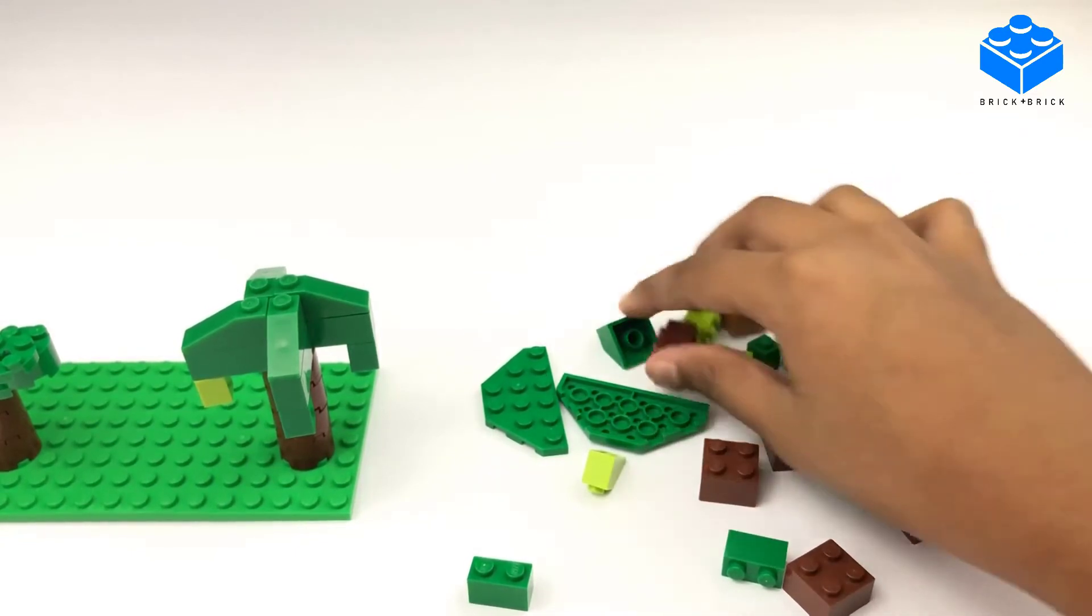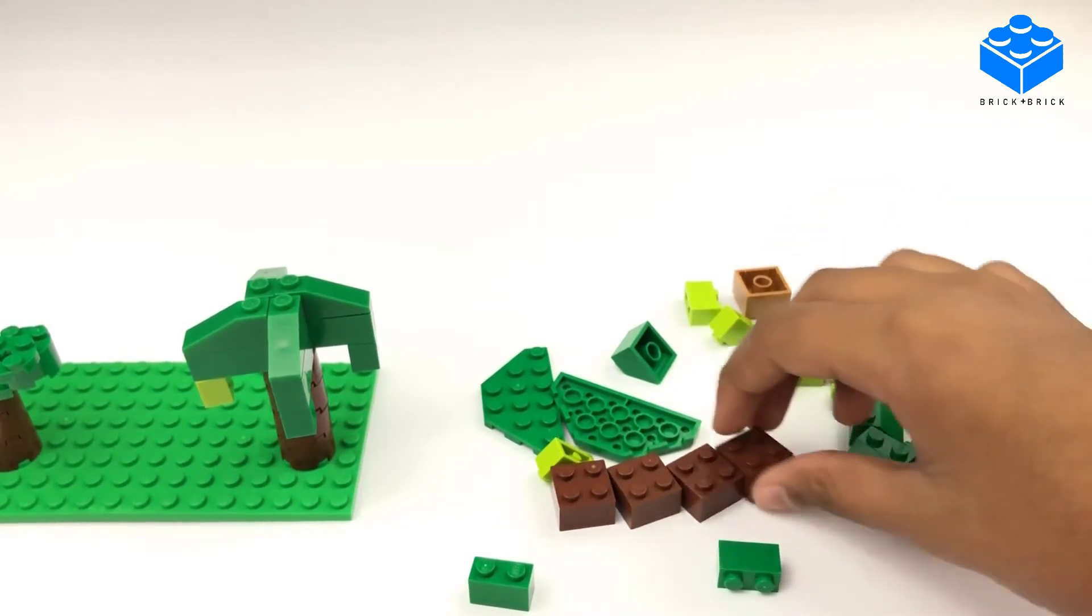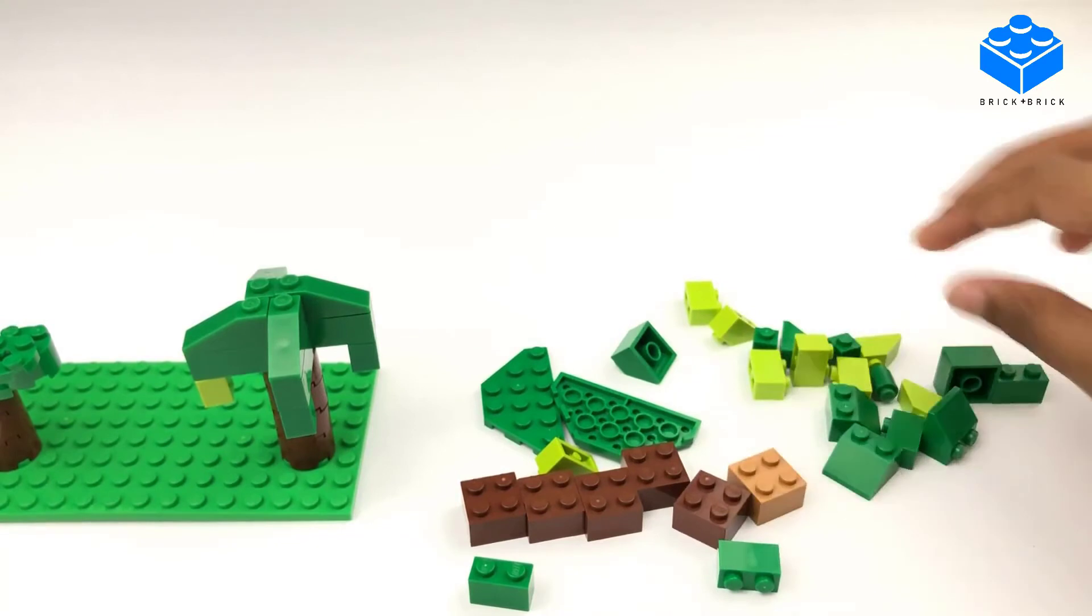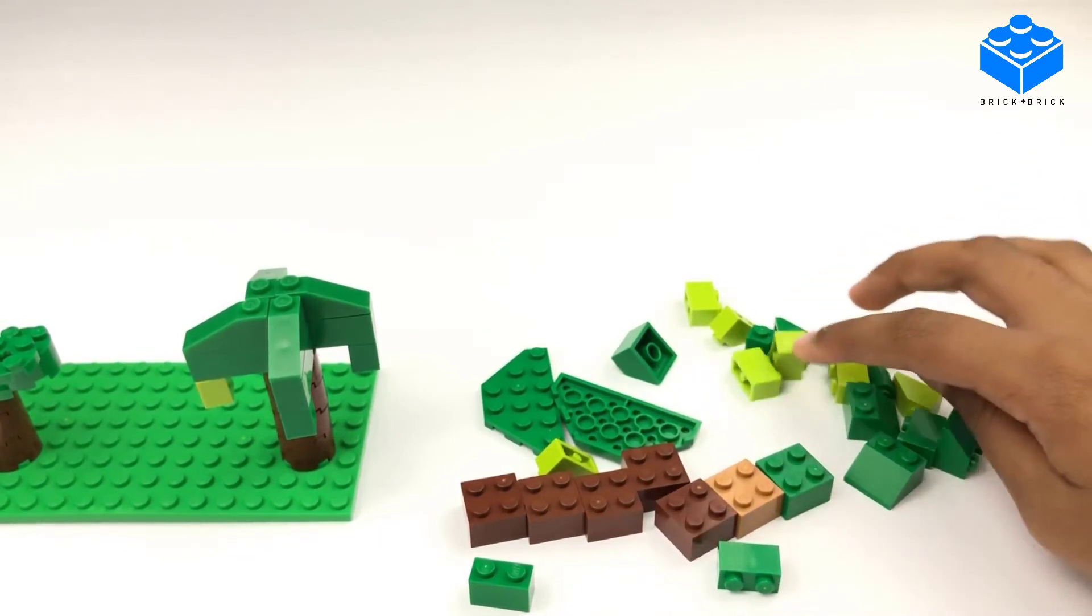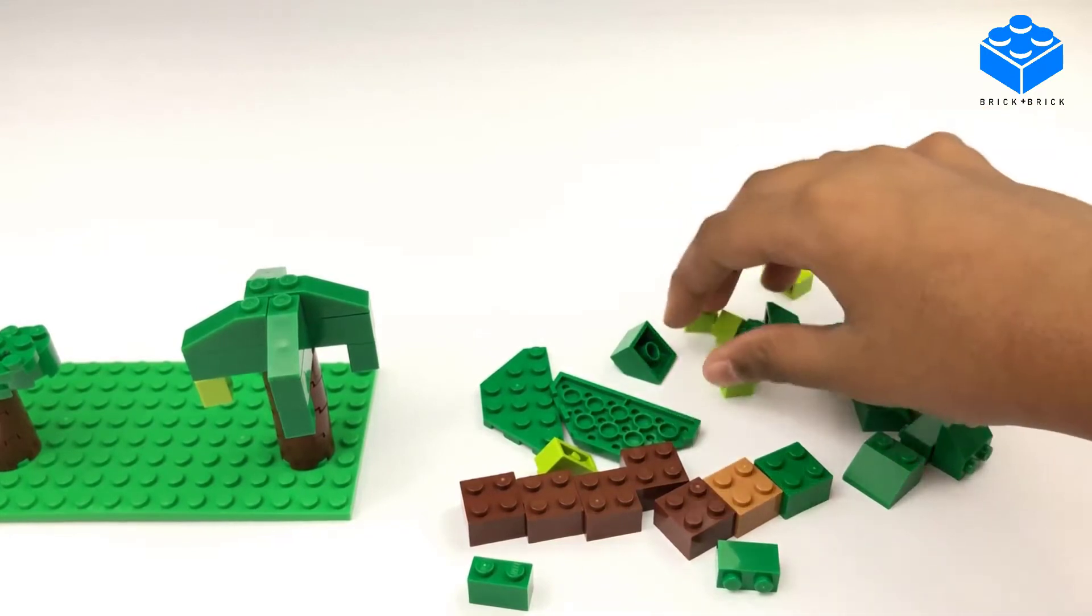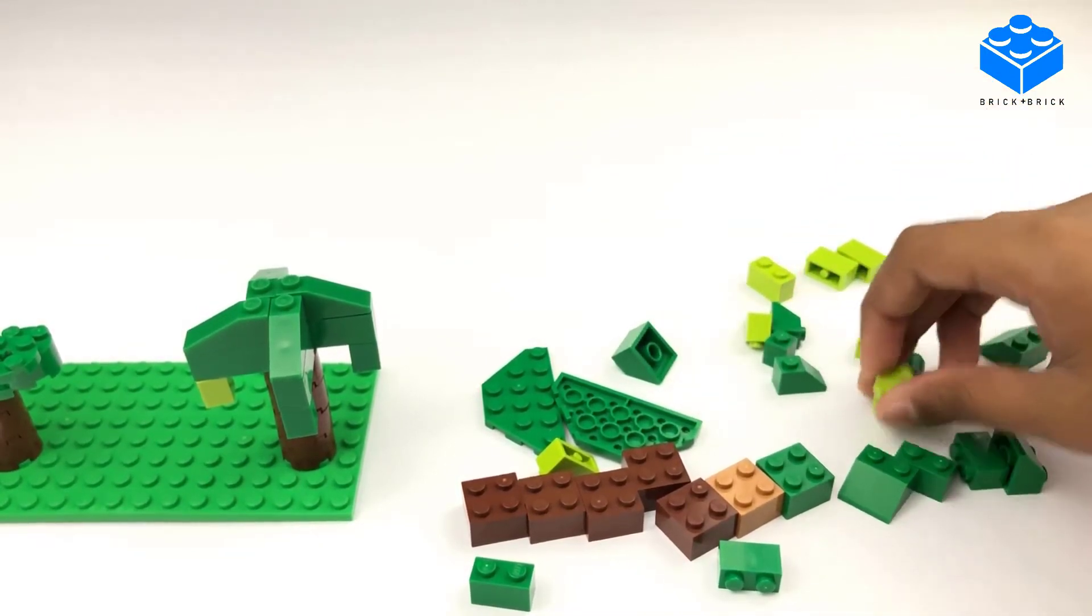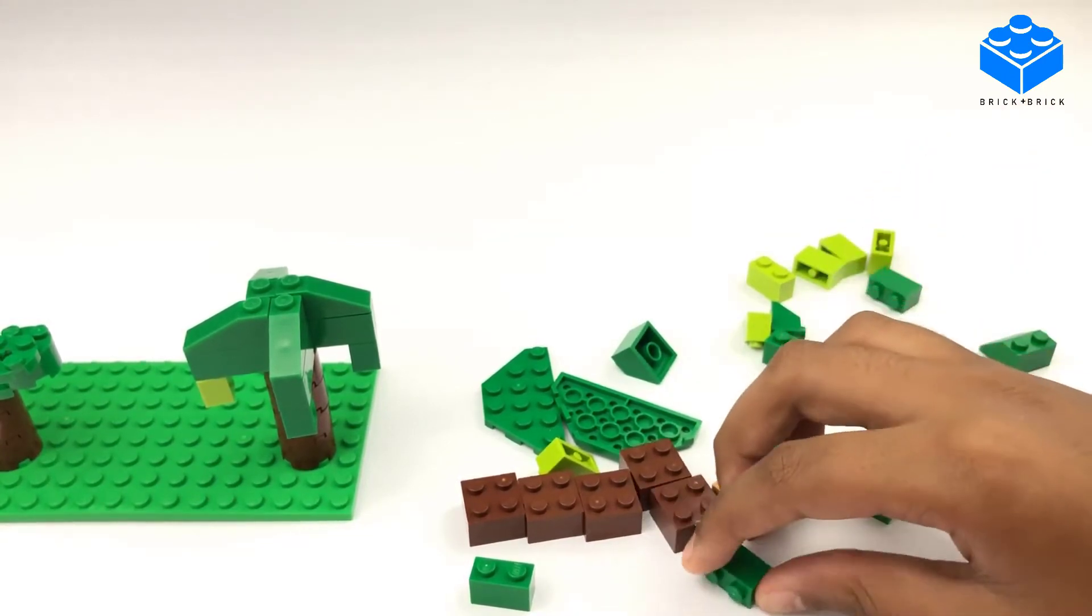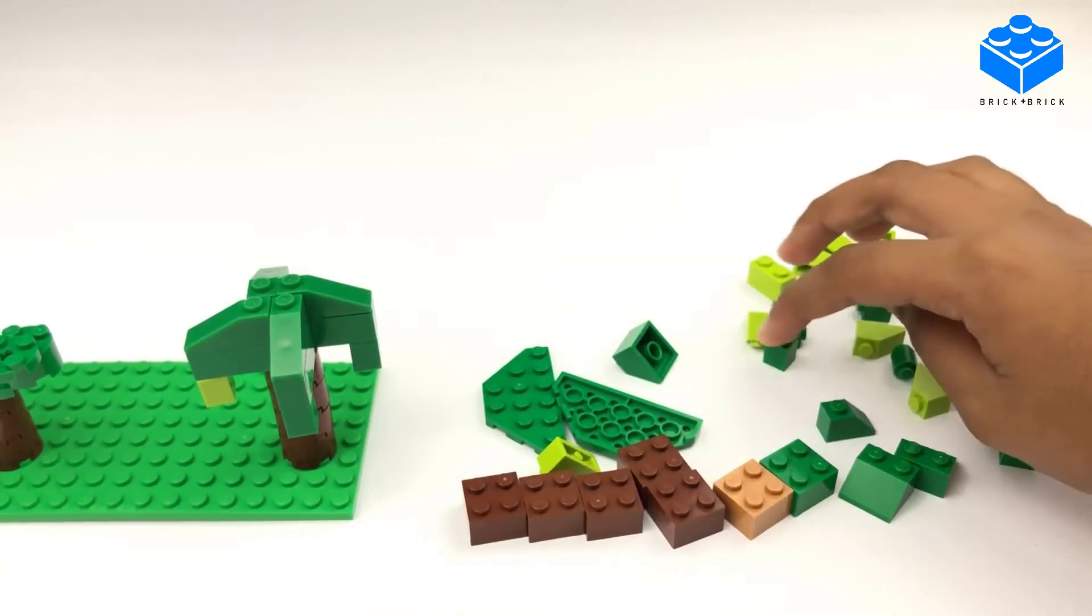So let's go over the pieces. You need one, two, three, four, five, six, seven two by twos. One, two, three, four, five, six, seven one by twos.